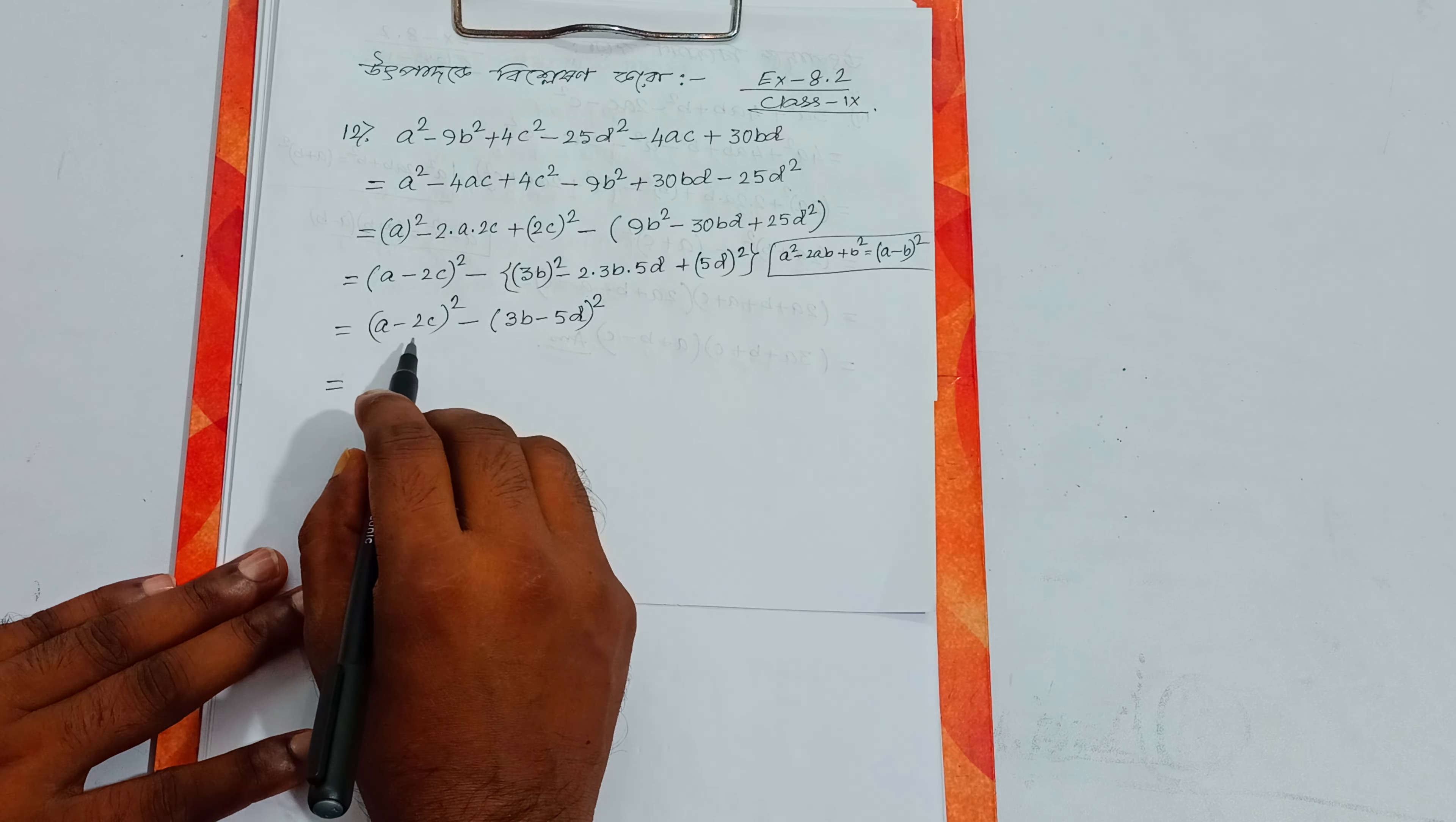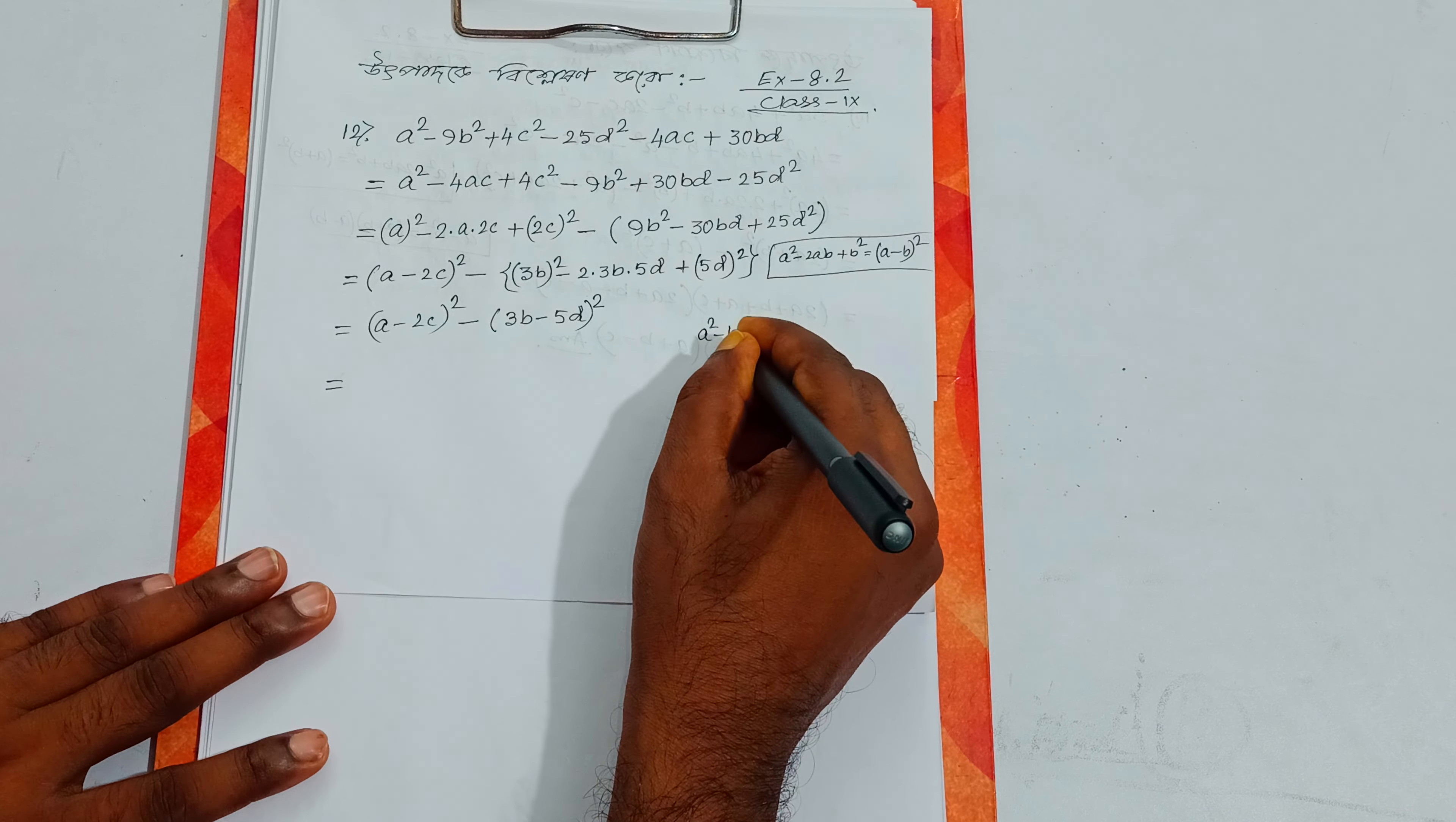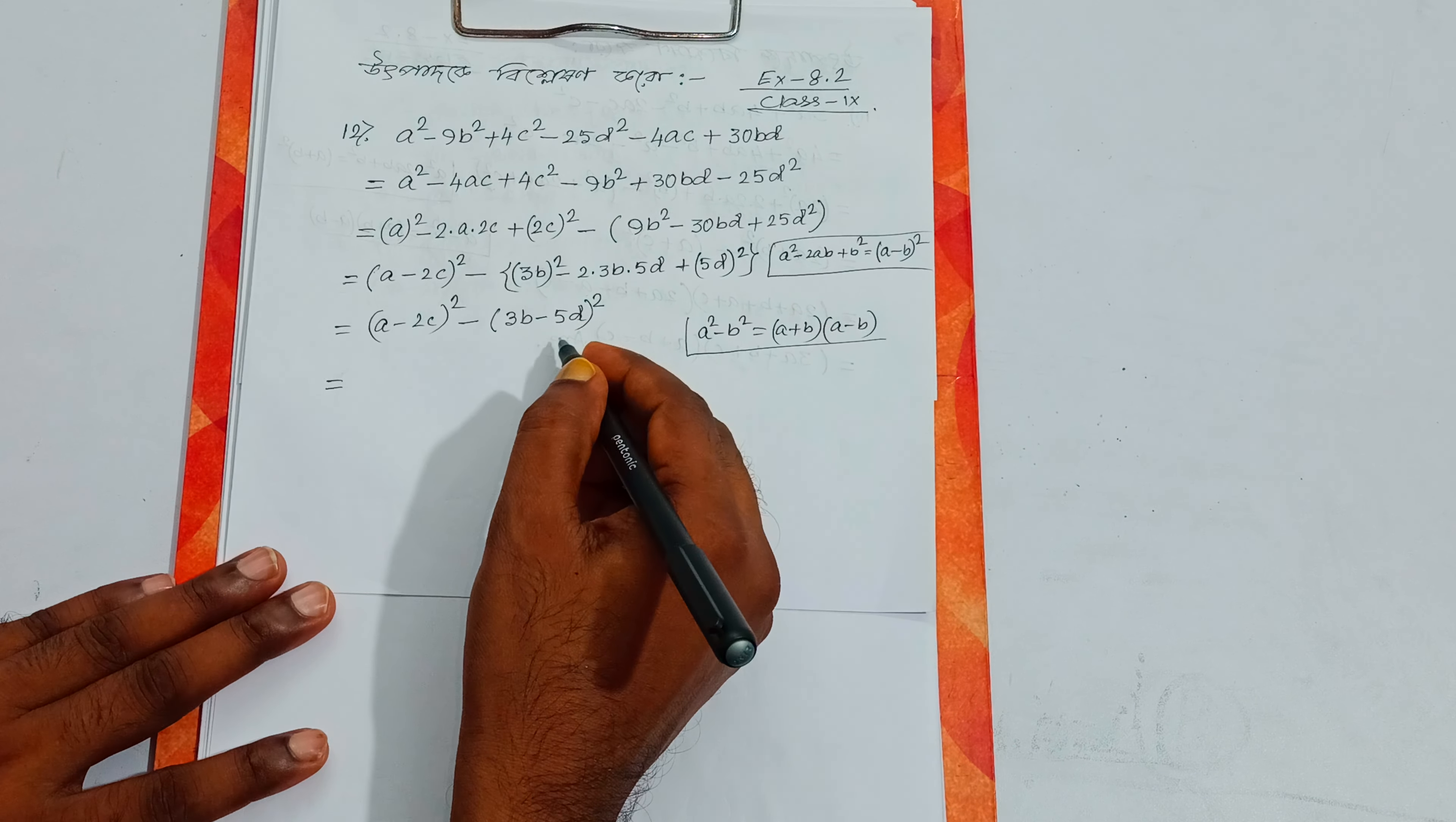As we can see, we now have a² minus b² pattern. Using the difference of squares formula: a² minus b² equals (a plus b)(a minus b).